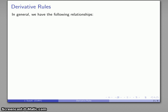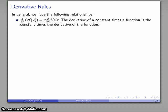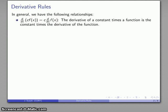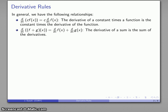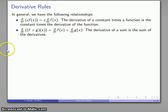In general, if I'm looking at the derivative of a function, I have the following relationships. First of all, the derivative of a constant times a function is the same as the constant times the derivative of the function. Another very useful rule is that the derivative of the sum of two functions is the same as the derivative of one function plus the derivative of the other function.